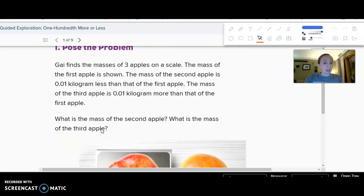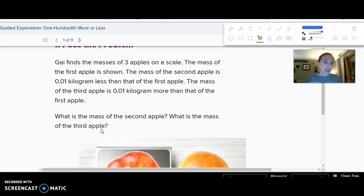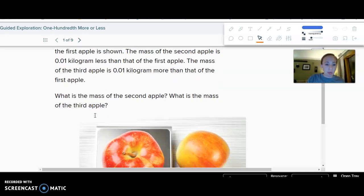So the problem we can think about: Guy finds the masses of three apples on a scale. The mass of the first apple is shown. The mass of the second apple is one-hundredth kilogram less than that of the first apple. The mass of the third apple is one-hundredth kilogram more than that of the first apple.